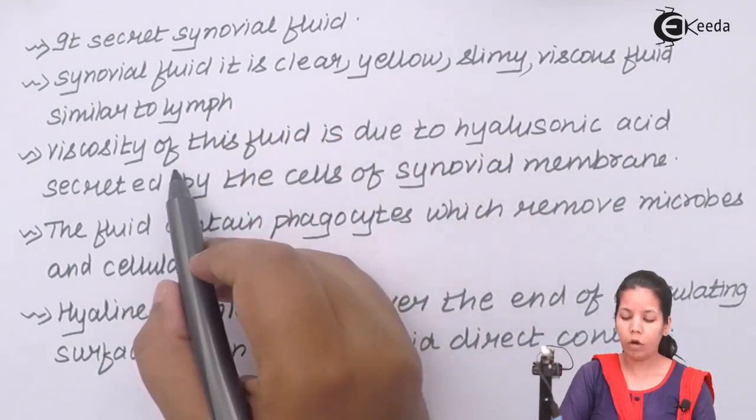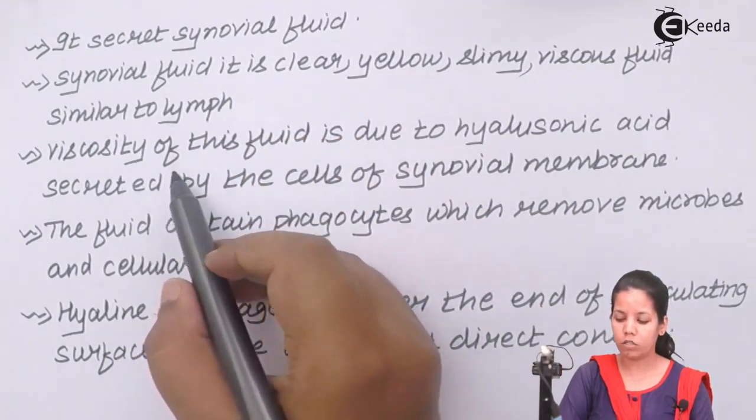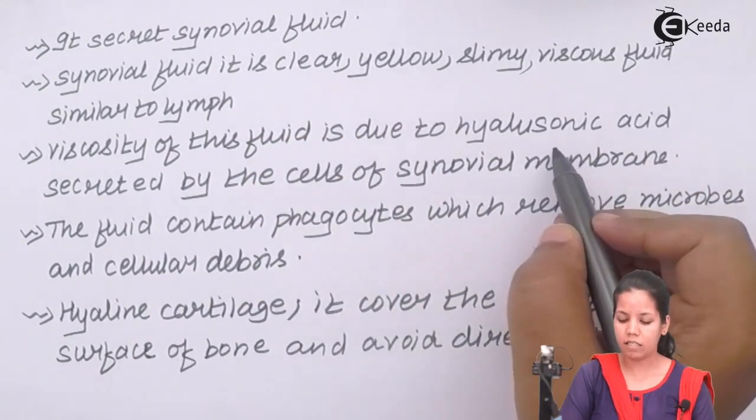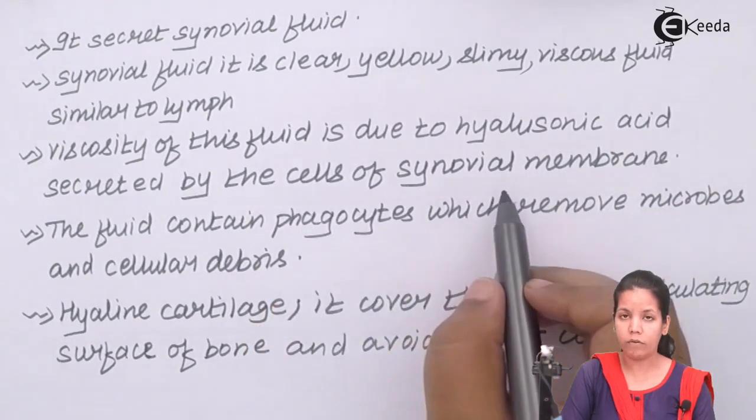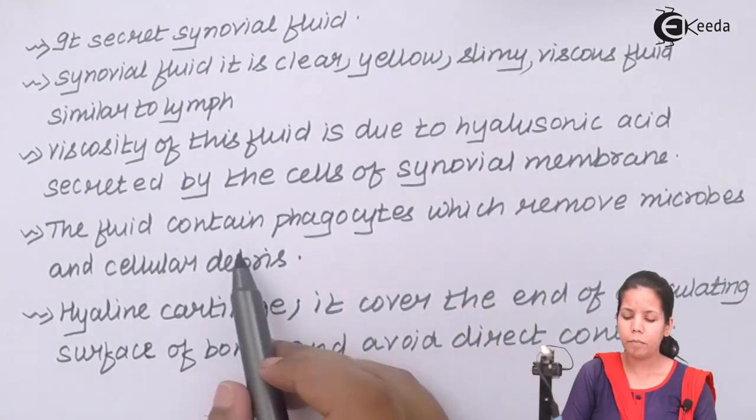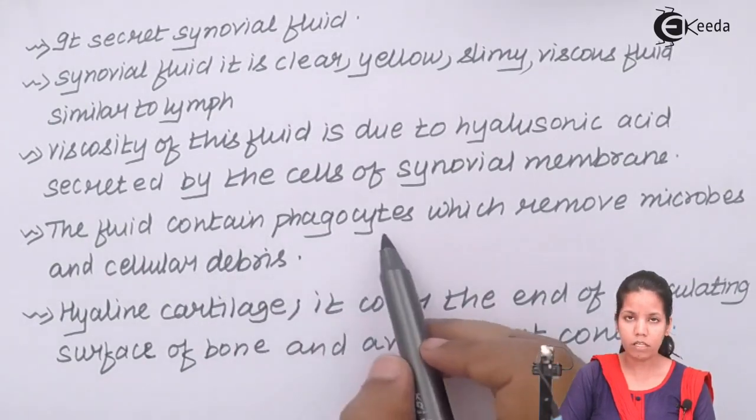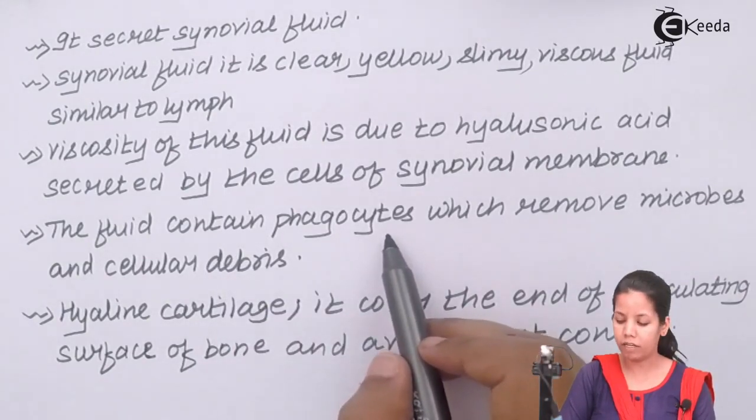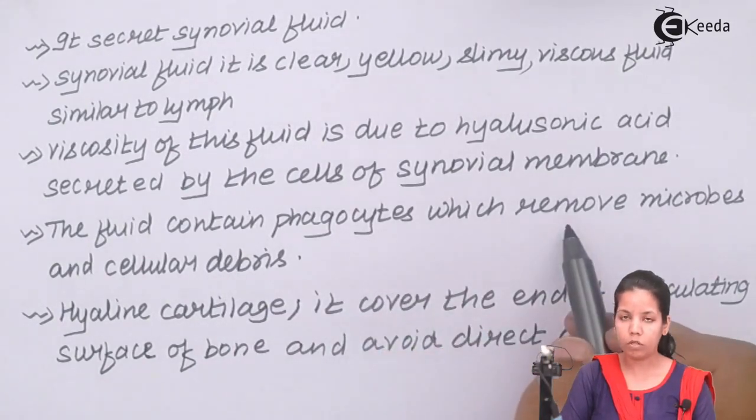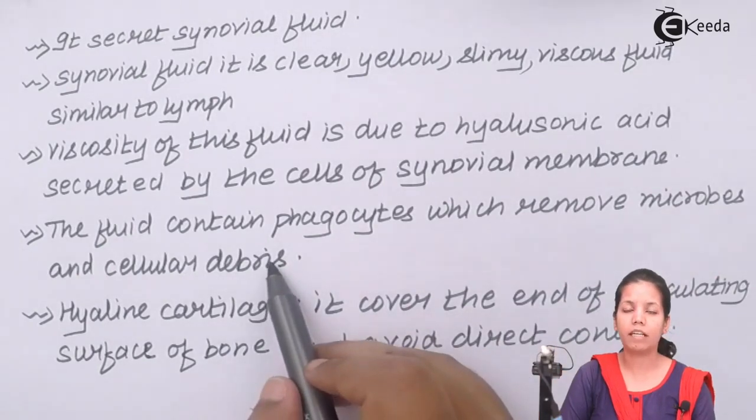The viscosity of this fluid is due to hyaluronic acid secreted by the cells of synovial membrane. This fluid basically consists of phagocytic, or engulfing, cells which remove microbes and cellular debris from that particular region.